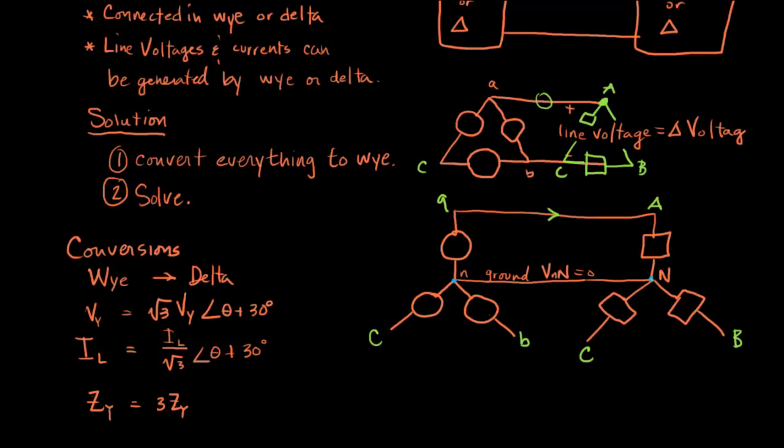We have some nomenclature that we use, and that is important to keep in mind, especially when you're parsing through a question and trying to understand what you're being asked. Typically, the source is labeled with lowercase letters at the extremities. And if it's a Y, there'll be a lowercase n in the center. And the load are uppercase letters.